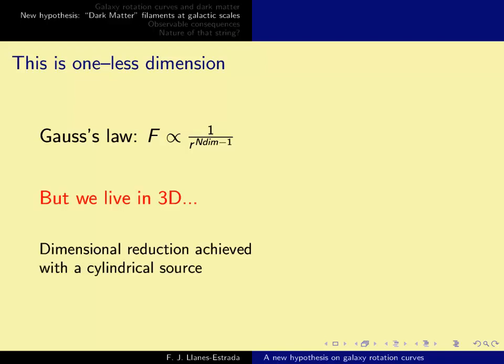Now we live in three dimensions, so that's why we see a one over r squared law in gravitation. So how do we come up with one less dimension?